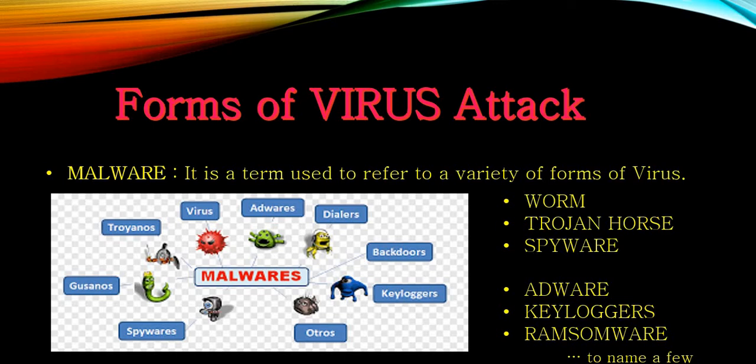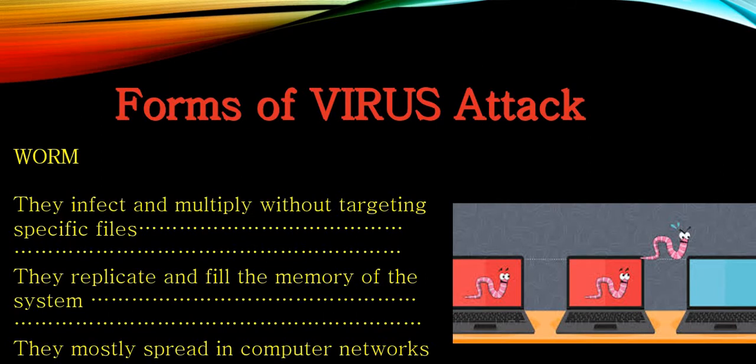Then forms of virus attack. What is malware? Malware is a term used to refer to a variety of forms of virus. There are many types, and while biological viruses are real living beings, computer viruses are non-living. These include worm, trojan horse, spyware, adware, keylogger, and ransomware — all are forms of virus programs.